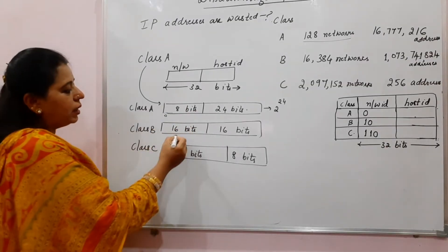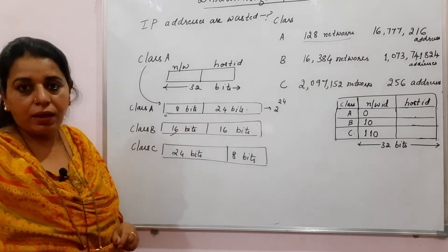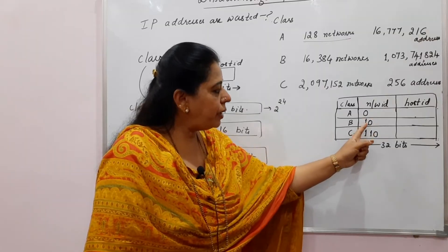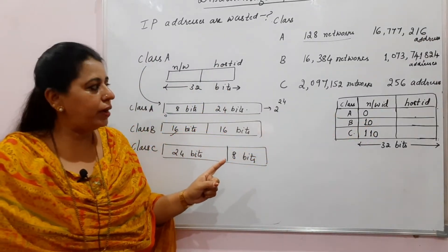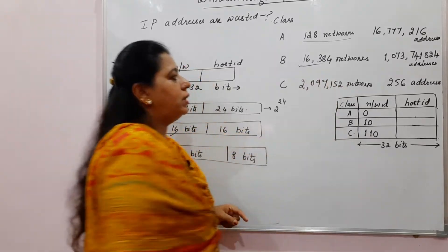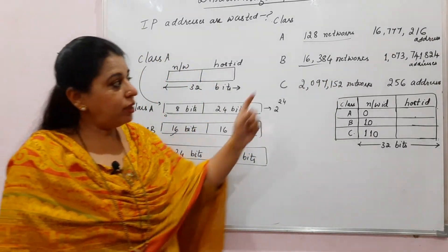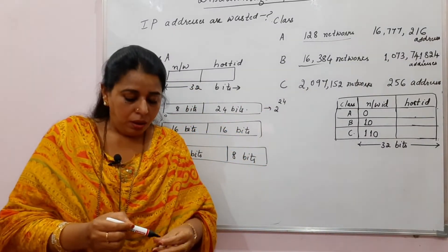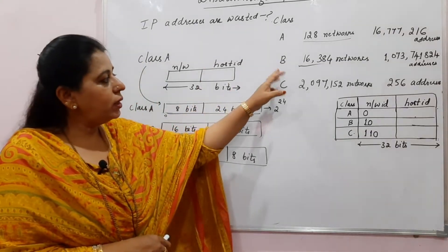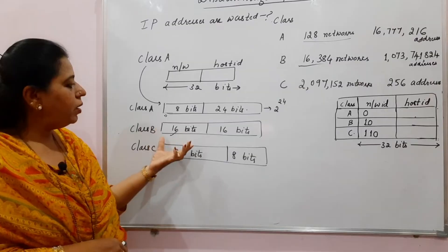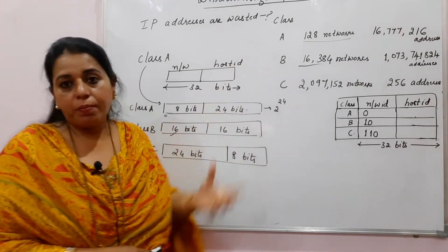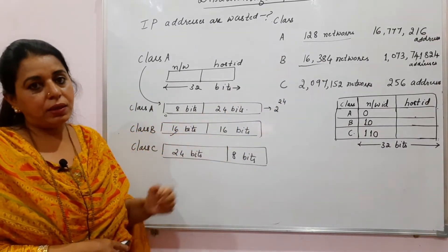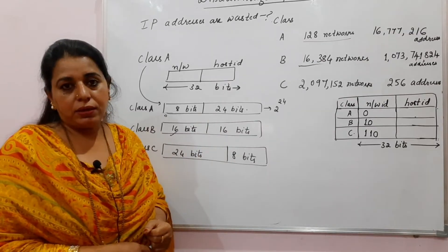Even if you take class B addresses — in class B, 16 bits are there for the network part, but the first two bits indicate the class type. An IP address starting with '10' indicates it is a class B address. So 2 to the power of 14 gives 16,384 networks. In each network, more than a crore IP addresses are possible. Even though it is a mid-size block, many organizations may not prefer it — once again, they may not be able to utilize all those addresses, and they go wasted.